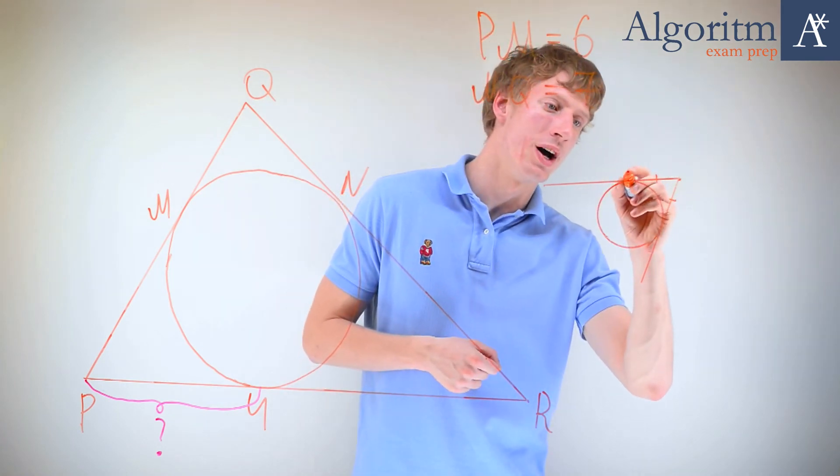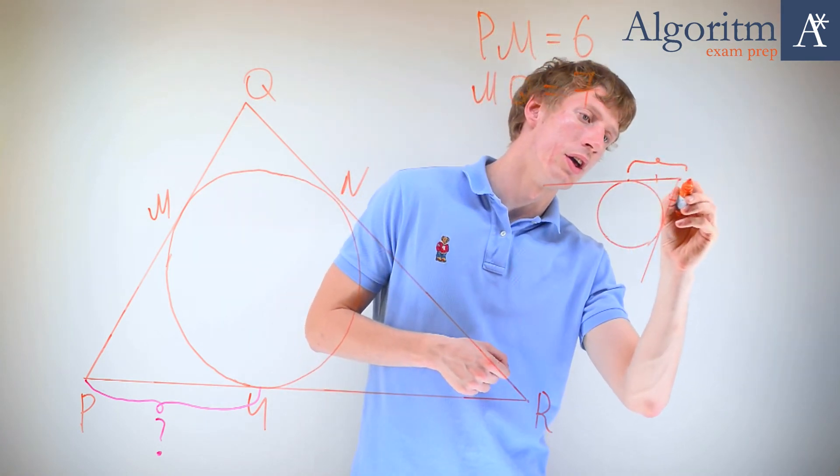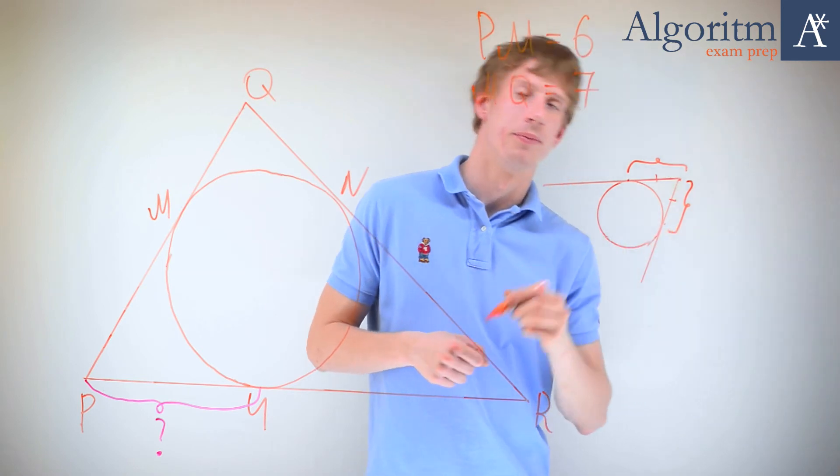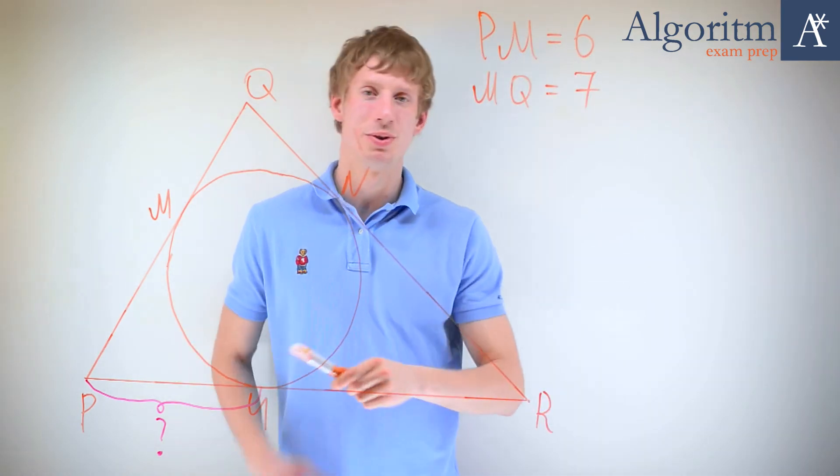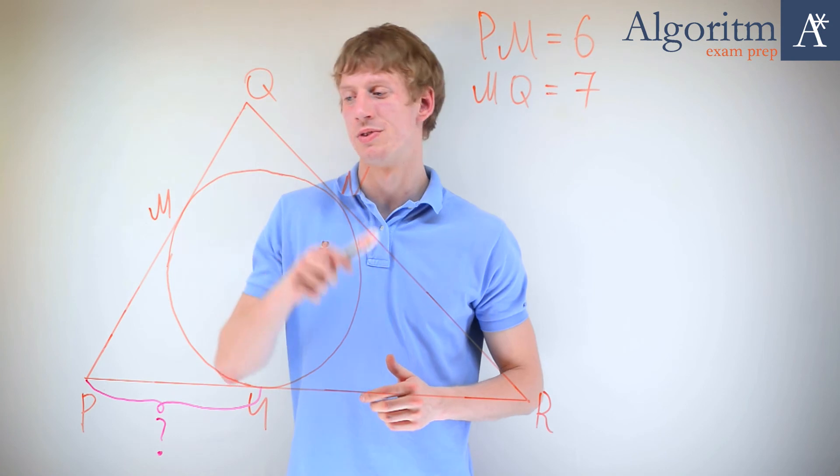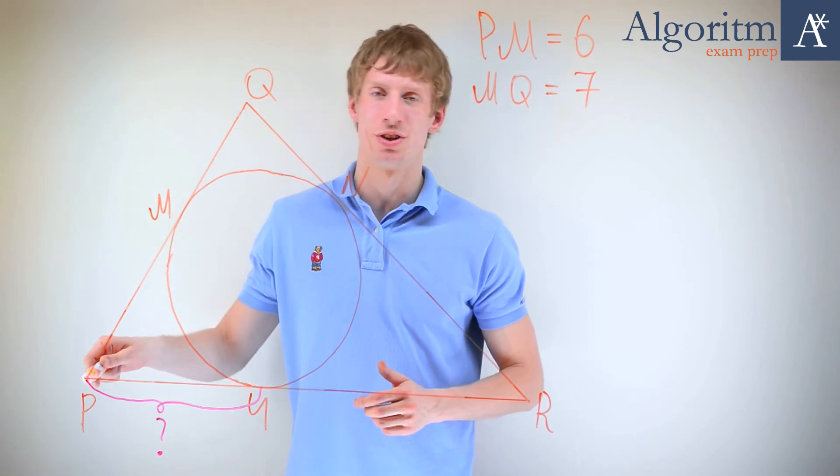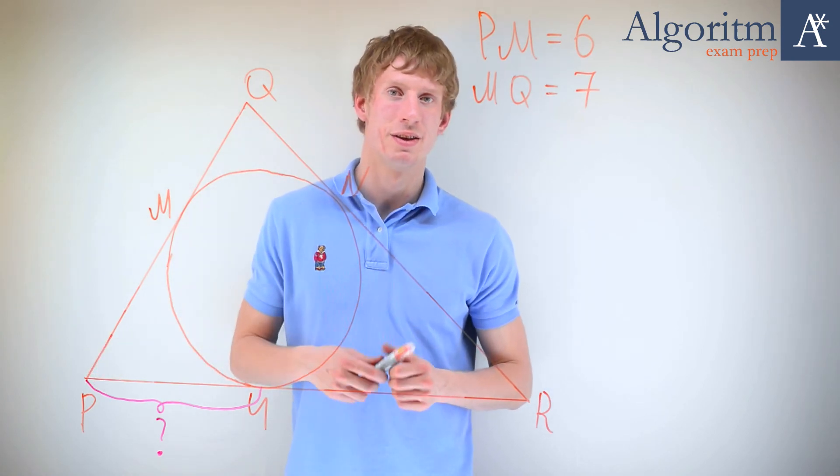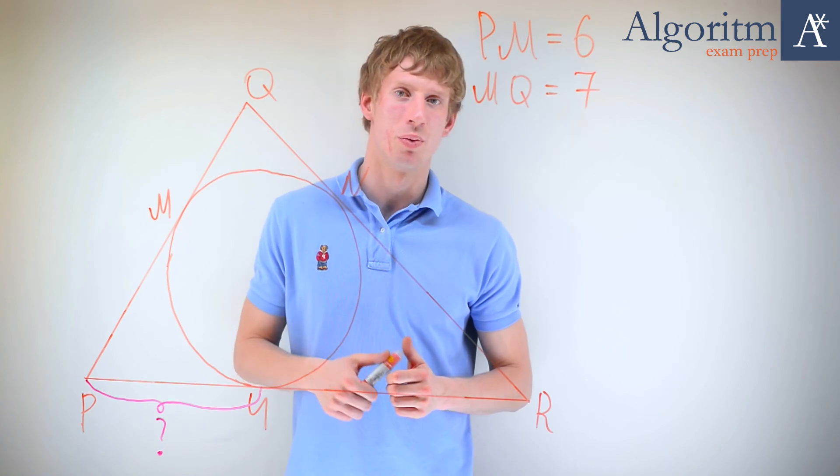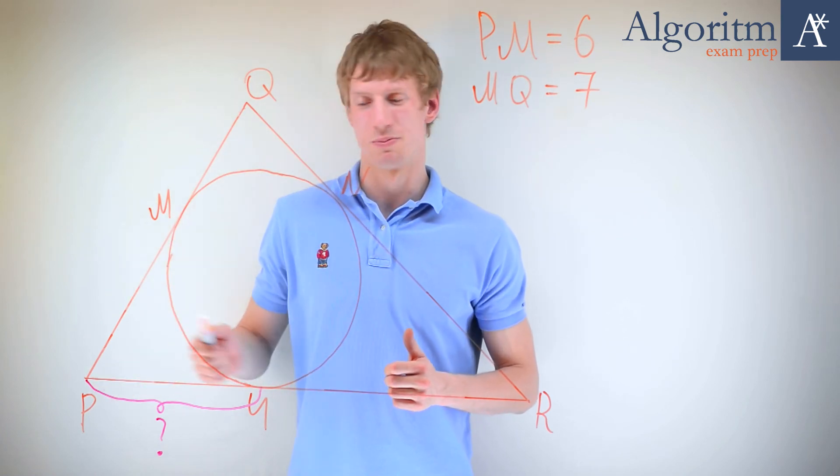Hence, this one equals this one. PM and PU are the tangent segments to the circle from the same external point P. Hence, by the previous theorem we can conclude that PM equals PU.